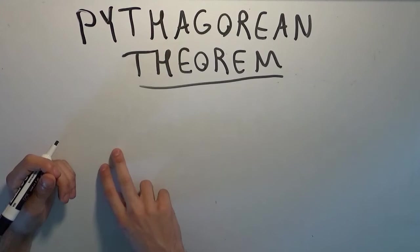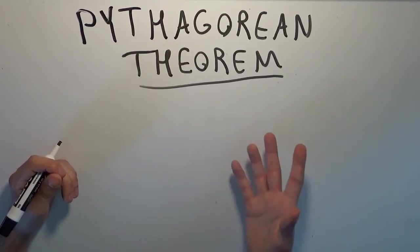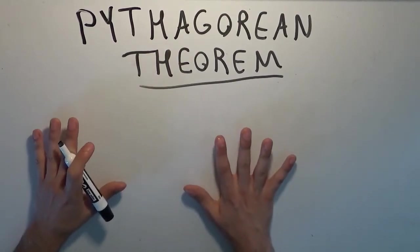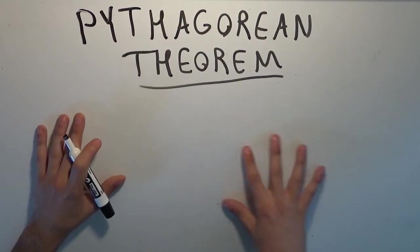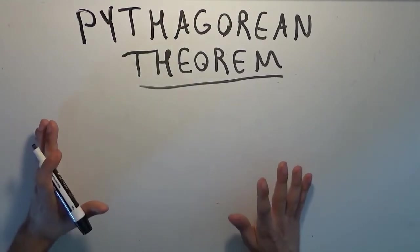Two proofs at the beginning, and then I'm going to go through some properties and examples to really solidify the idea. And then at the end I'm going to show you my favorite proof — it's really, really neat.